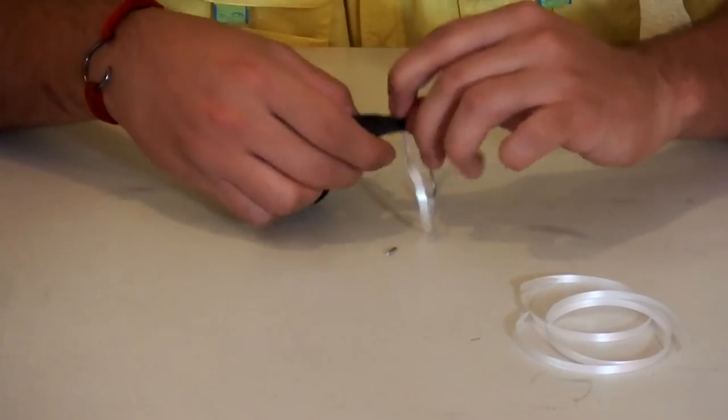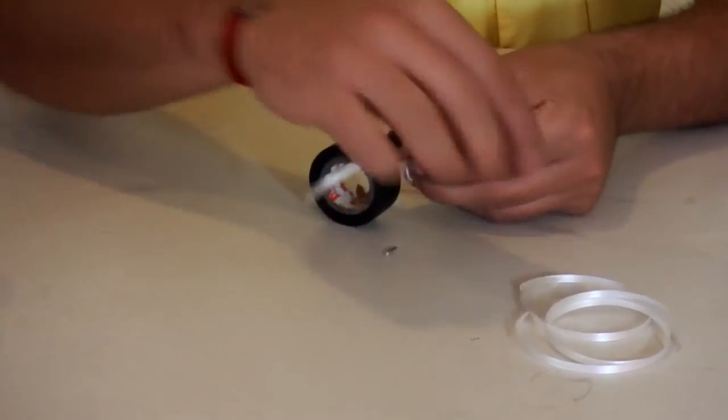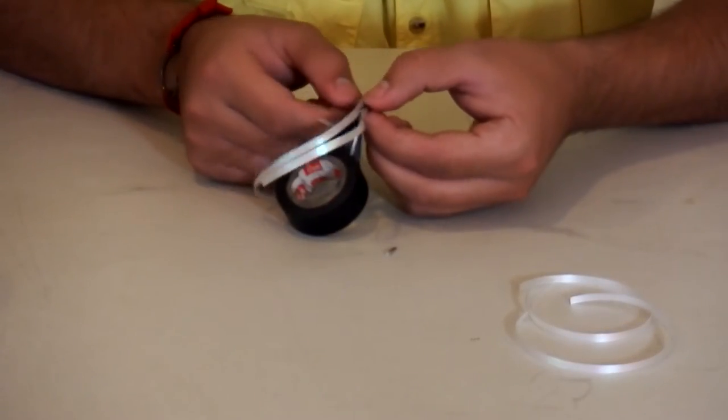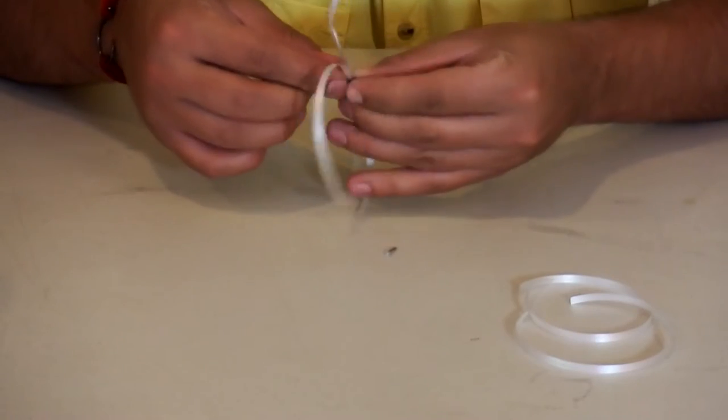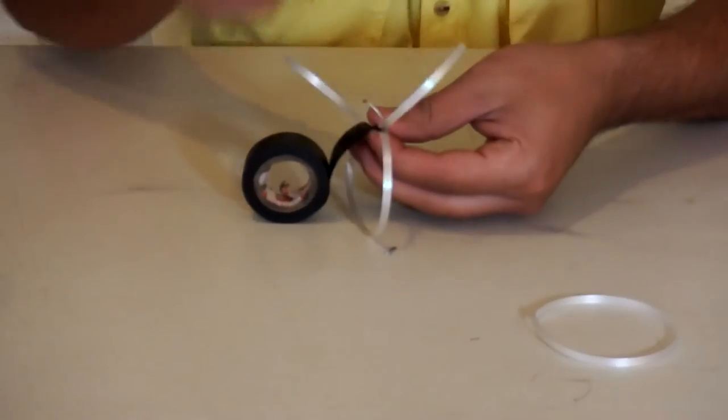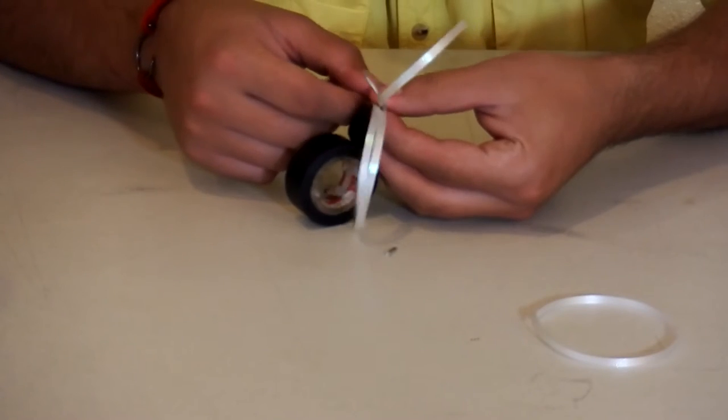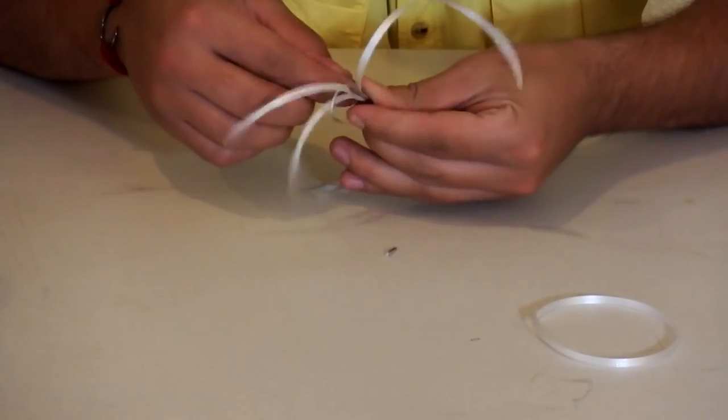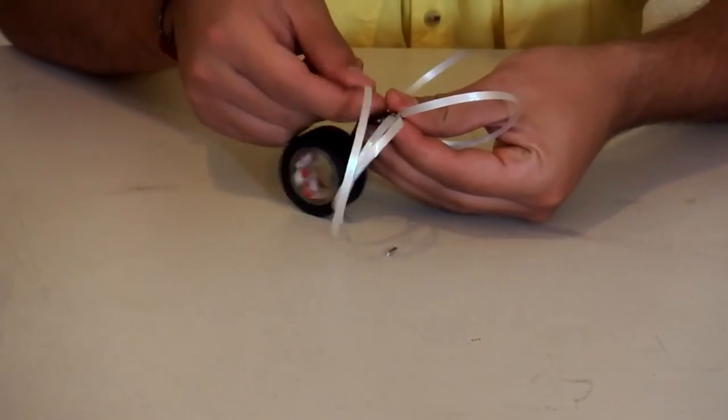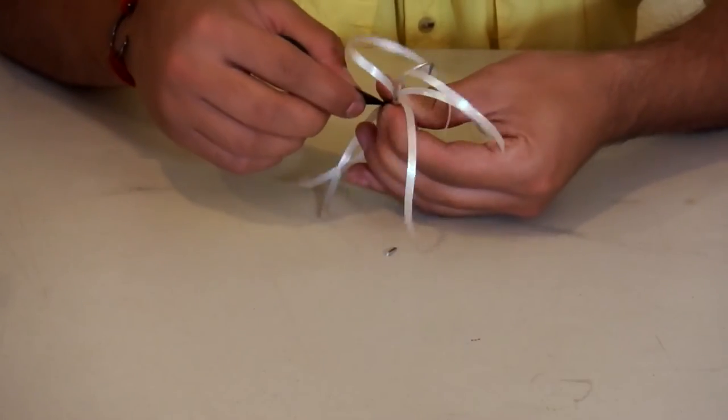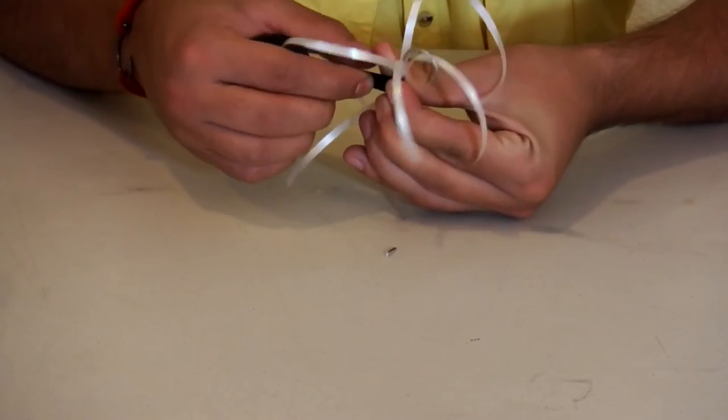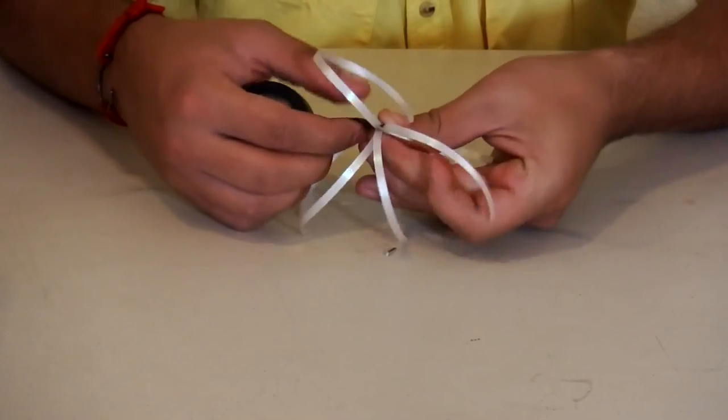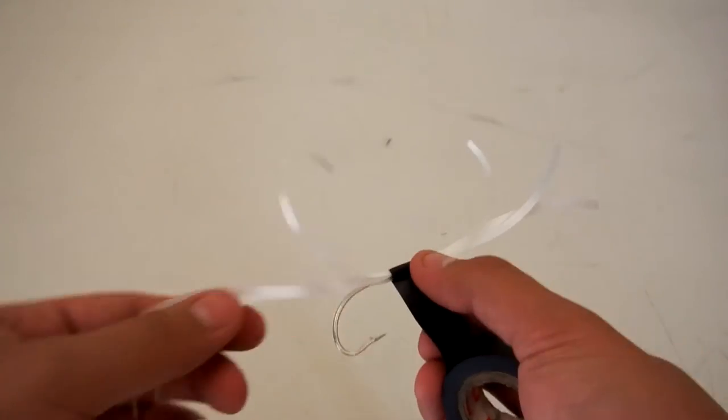Once you wrap that piece, I'm going to do the same thing to the next one and just keep adding them. Just like that. So now we have these four pieces on, four out the front, four coming out the back.